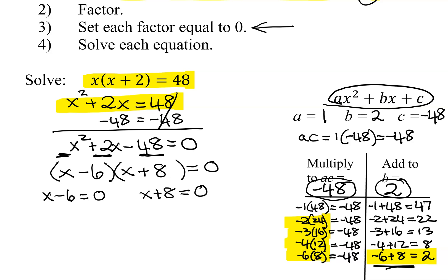And then you're going to get two little linear equations that you're going to solve. So I'm going to add 6 to both sides here. So I get x equals 6 and subtract 8 from both sides here. x equals negative 8. So here are my two solutions to this equation.